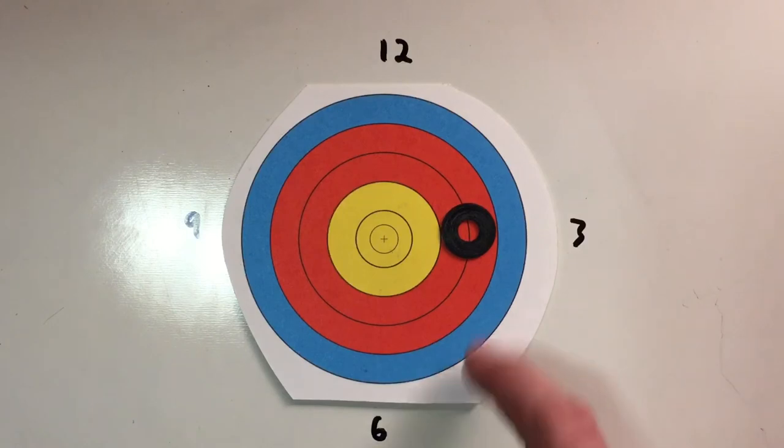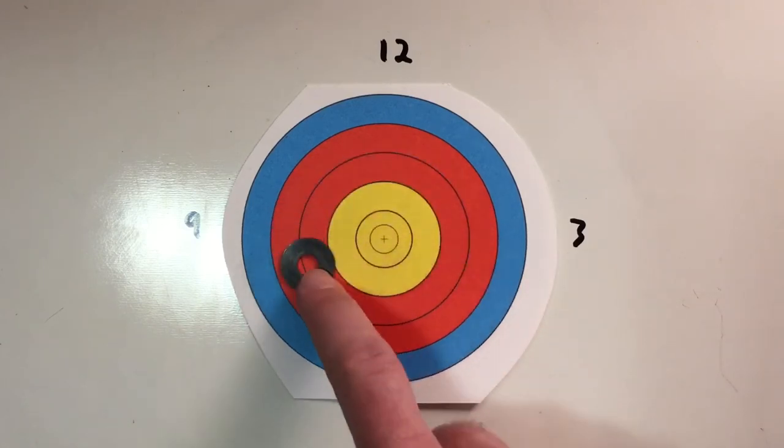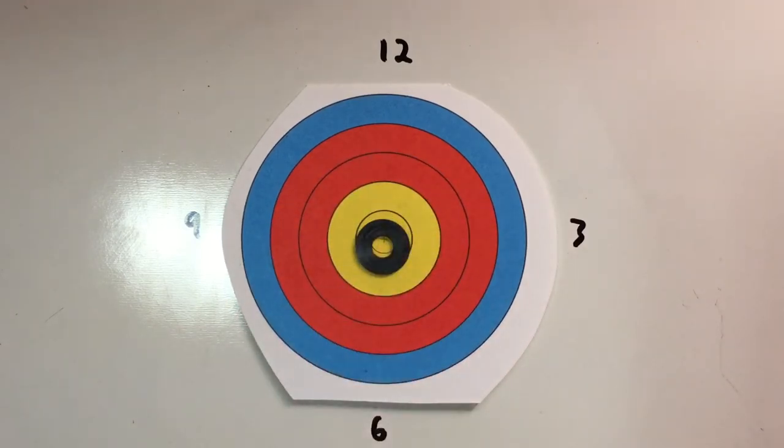So next time you shoot, try setting up nothing outside of the red, no more than outside the red, and see how does that improve your consistency and your rhythm and timing. You might even find your groups are tighter and you get more arrows in the center.